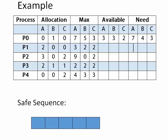We find out the need matrix for all processes. The remaining rows are 1 2 2, then 6 0 0, then 0 1 1, and finally 4 3 1. Now that we have found the need matrix, we need to check whether a safe sequence exists for the given example.